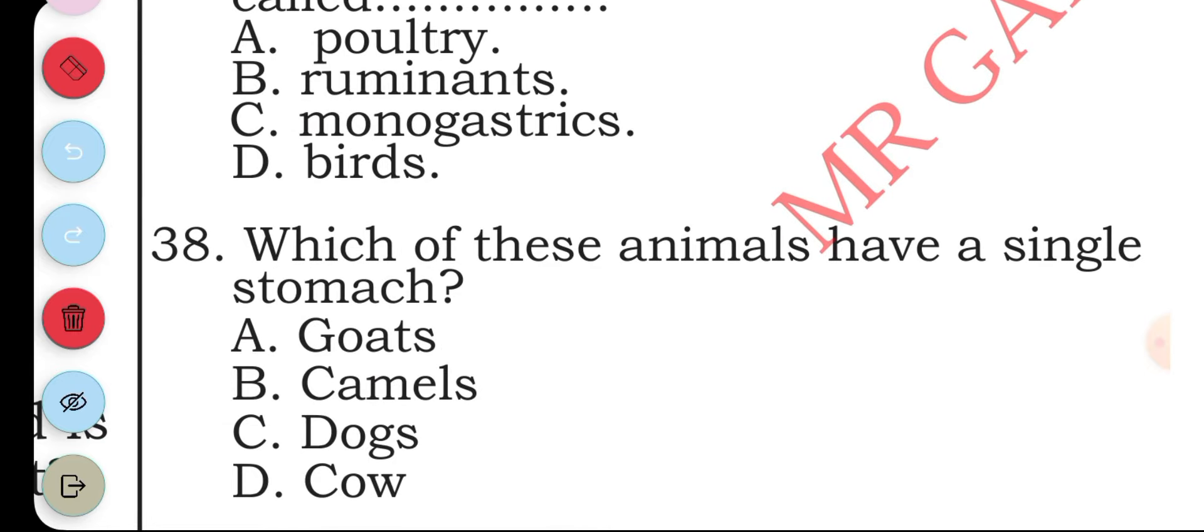Question thirty-eight: which of these animals have a single stomach? A goat, B camel, C dog, D sheep. The answer to question thirty-eight is dog.